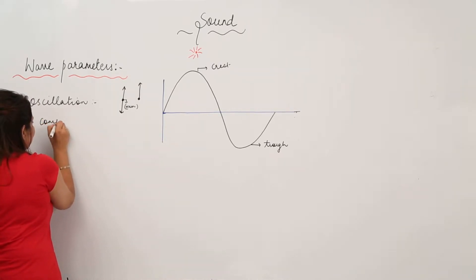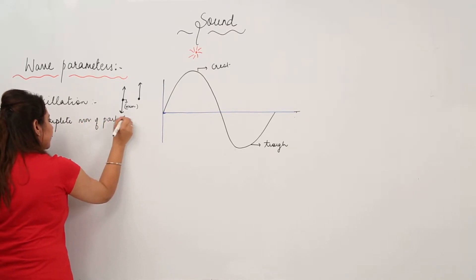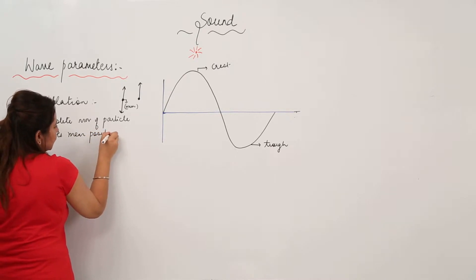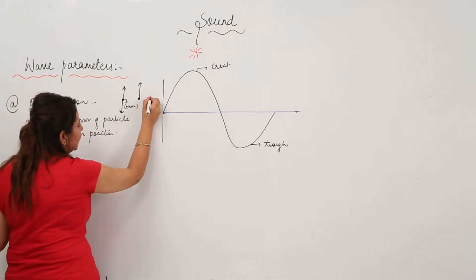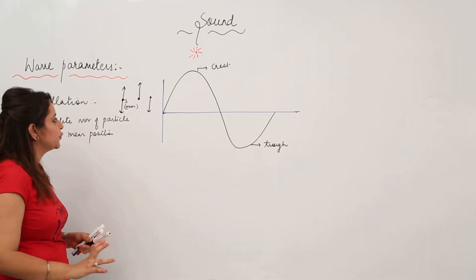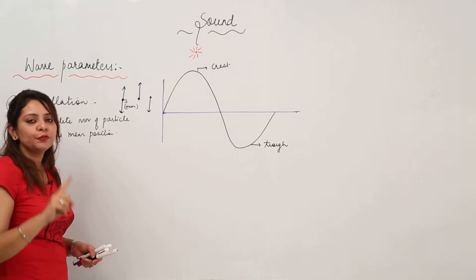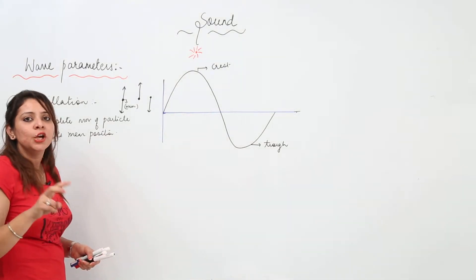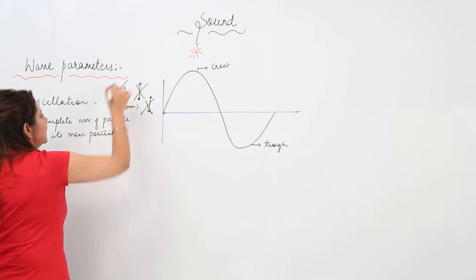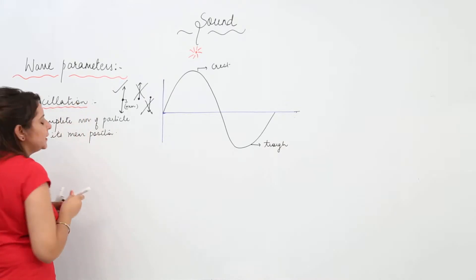So the complete movement of particle about its mean position is the oscillation. If I draw a wave with just a crest and a trough, that is not an oscillation because a complete wave comprises one crest and one trough. So a half-wave is not a complete oscillation, but a full crest-and-trough cycle is one oscillation — the complete movement of particle about its mean position.